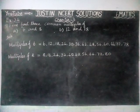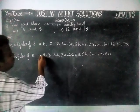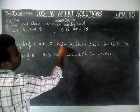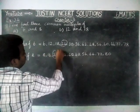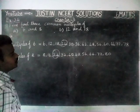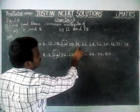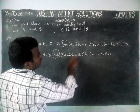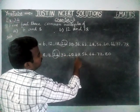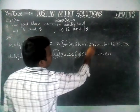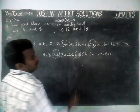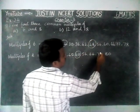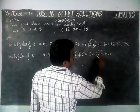Now, we have to find common multiples. Here, the first common multiple is 24. Next common multiple is 48. Next common multiple is 72.